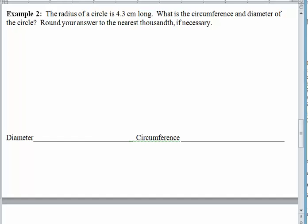We have example number two. The radius of a circle is 4.3 centimeters long. We would like to know the circumference and diameter of the circle. And since pi is something that has an infinitely long decimal portion, we're going to need to round our answers. And so this time, we will round to the nearest thousandth.